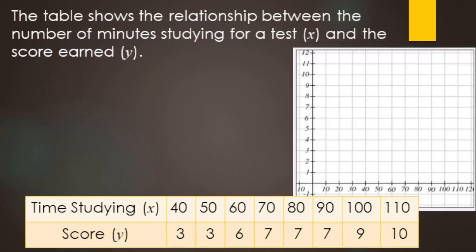We have a table showing the relationship between the number of minutes studying and the score students earned on a test. The first point: 40 minutes earned a score of 3, so we plot that point there. 50 minutes also gave a score of 3, so both those students got 3.